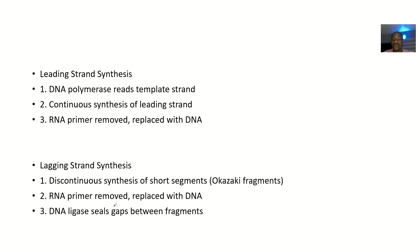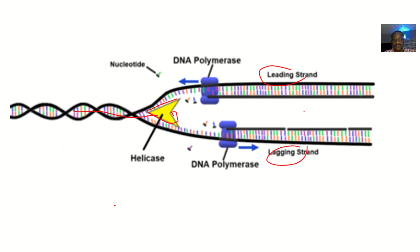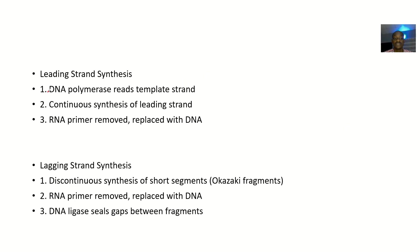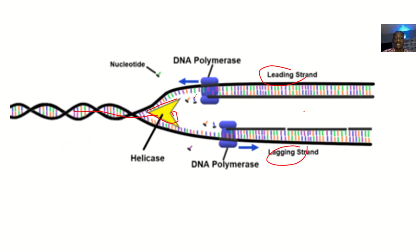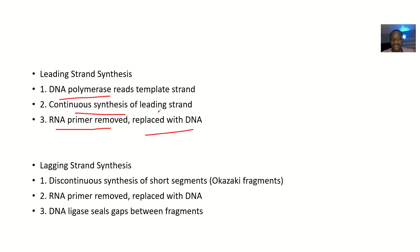Moving to the next one — formation of the leading strand. DNA polymerase reads the template strand, and there is continuous synthesis of the leading strand. The RNA primer is removed and then replaced with DNA. The RNA primer is stabilizing it here, so as the DNA is being formed, the RNA primer will be removed so that the DNA will now have a place to pass.